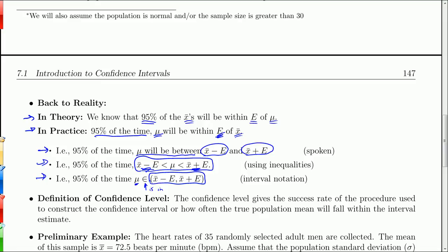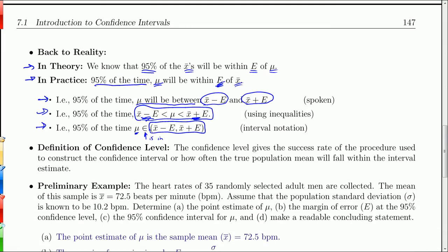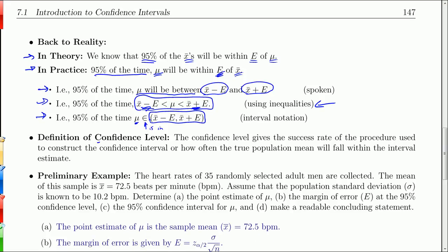So another few ways of saying this. 95% of the time mu the population mean will be between x bar minus E and x bar plus E. And to use inequalities you can say that 95% of the time mu is greater than x bar minus E and less than x bar plus E. And using interval notation we say mu is an element of or is in this interval. So all of these actually work. We will probably be dealing, to emphasize what we're dealing with here, we're going to use inequalities. Because it really shows that our population mean is between two values. And the confidence level basically gives us the success rate of our procedure. We're 95% confident in this interval means that 95% of the time the actual mean will be within the interval estimate.